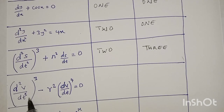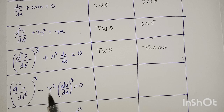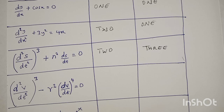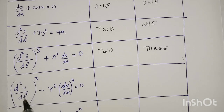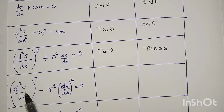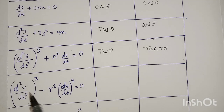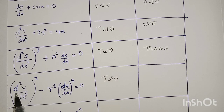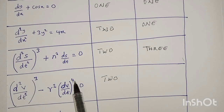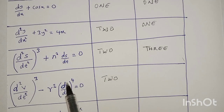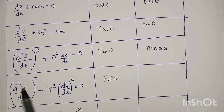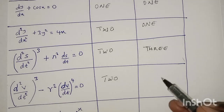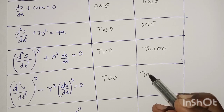Another one is (d²v/dt²)³ - r²(dv/dt)⁴ = 0. We have two derivatives here: d²v/dt² and dv/dt, but the highest is d²v/dt², so the order is 2 — sorry, the order is 2 because it is a second derivative. This highest derivative has power 3 and the other has power 4, so the degree is the power of the highest derivative, which is degree 3.